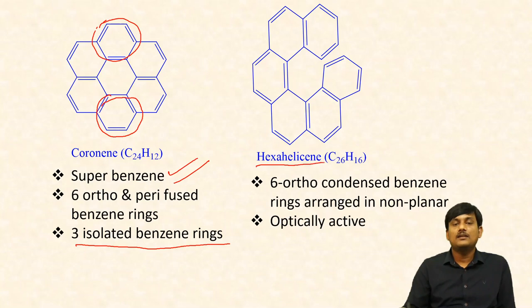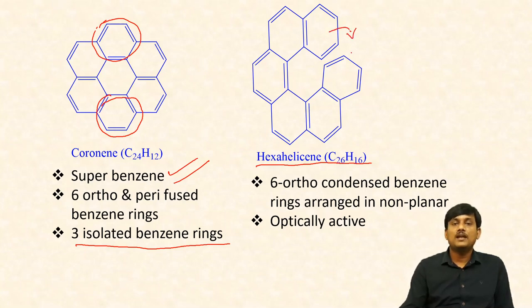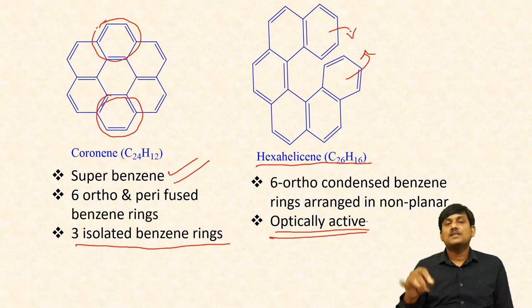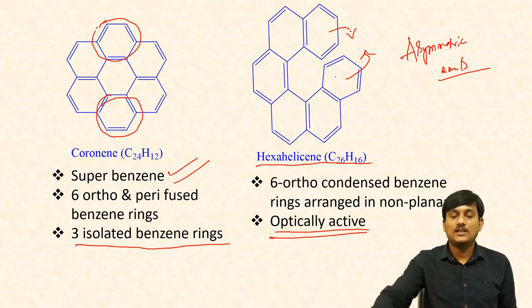And hexahelicene — in this case, six benzene rings are fused in helical fashion. Six ortho-condensed benzene rings arranged in non-planar fashion. This one is also non-planar because the two benzene rings are very close — one should be below the plane and one should be above the plane. This one is also non-planar but aromatic. And also this one is optically active — it can rotate plane-polarizing light due to an asymmetric axis, not an asymmetric center. That's why hexahelicene is optically active.